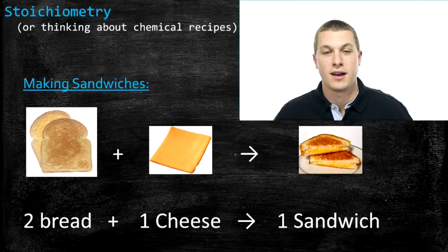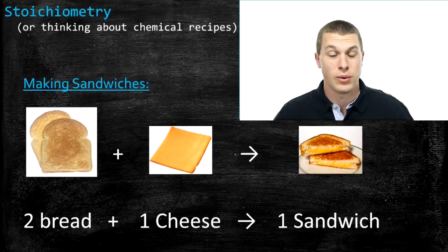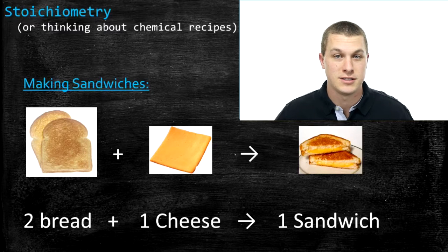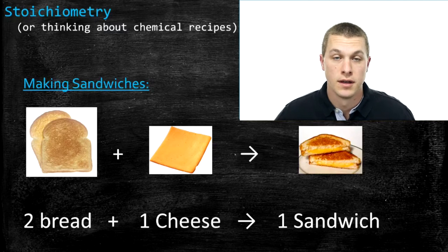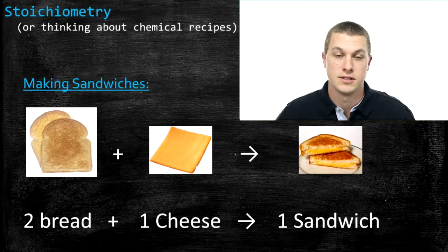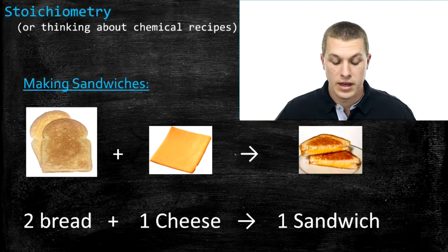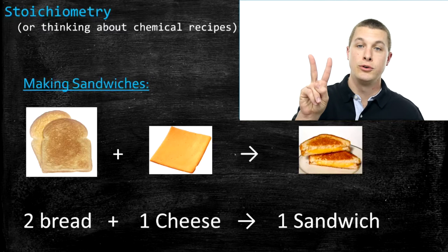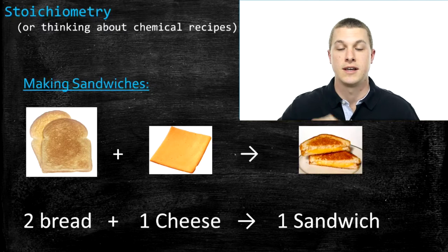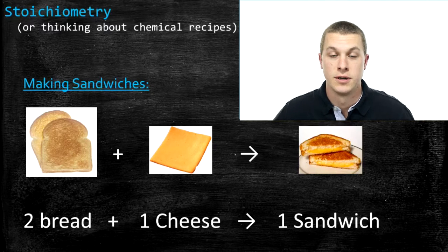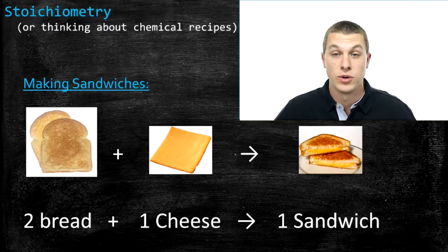Today on Real Chemistry we're going to be talking about stoichiometry. Stoichiometry is a big word that basically just means thinking about chemical reactions as being recipes. We're going to use a lot of analogies about food to get you thinking about chemical reactions as recipes for the products they're producing. In this first slide we have a simple recipe: you combine two slices of bread and one slice of cheese and you get out a cheese sandwich.